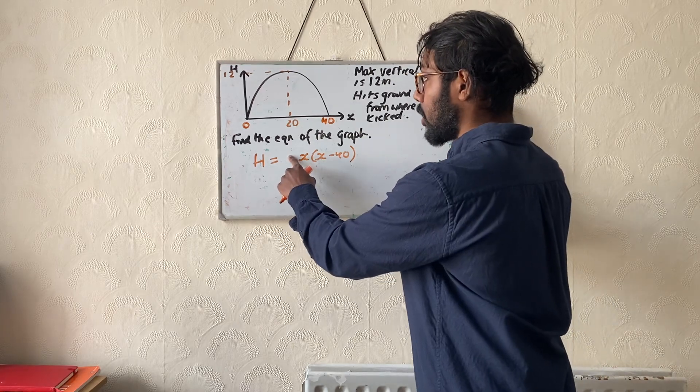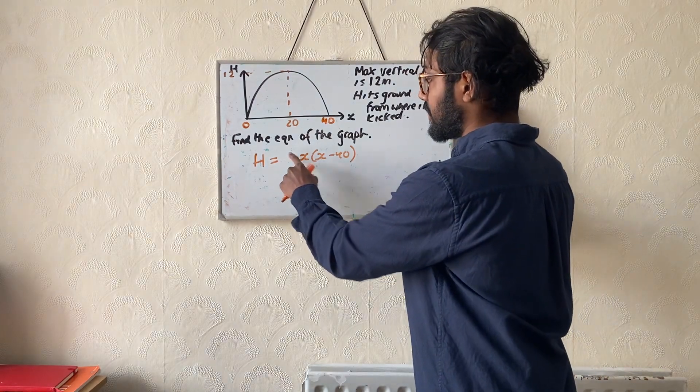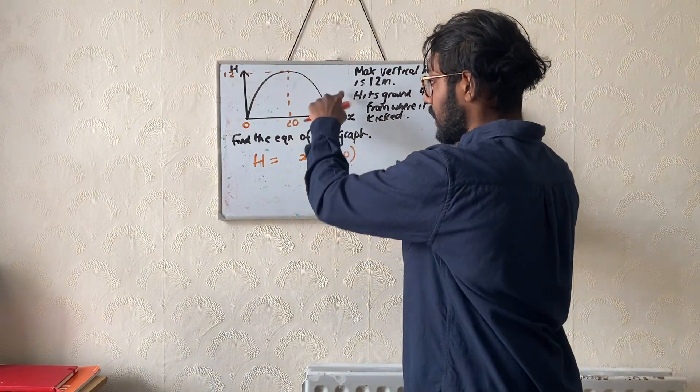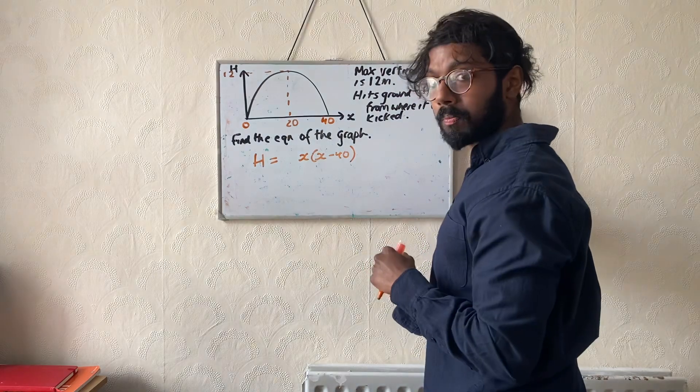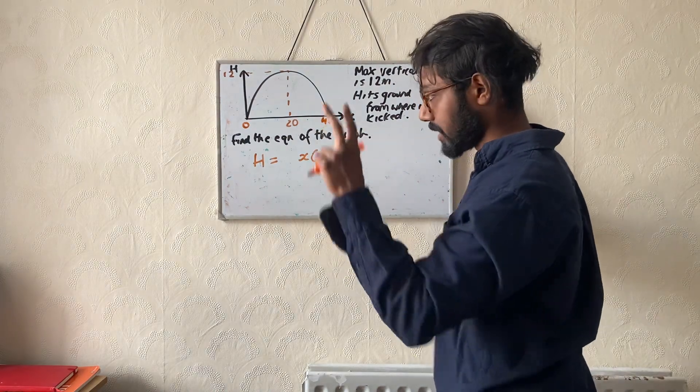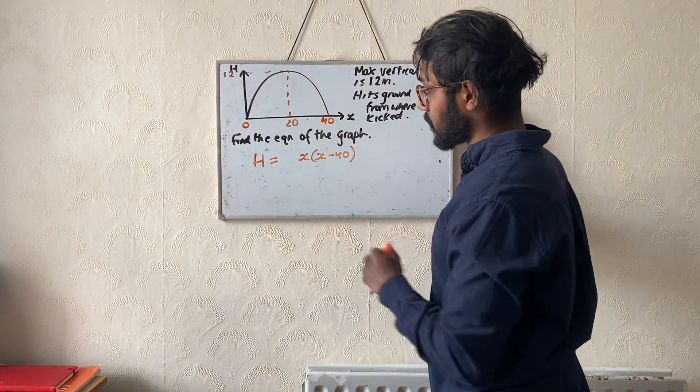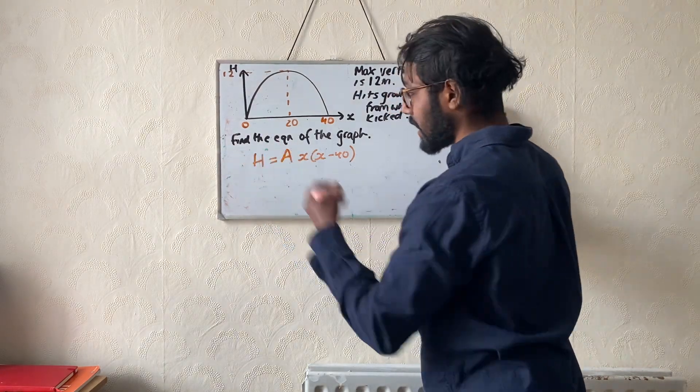We need to put a constant here that compensates for the fact that if it was just x brackets x minus 40, it would look like this, right? It would be a positive parabola, a positive coefficient for the x squared. So what I'm going to do is put a capital A here. This is my scale factor. You can use any letter.